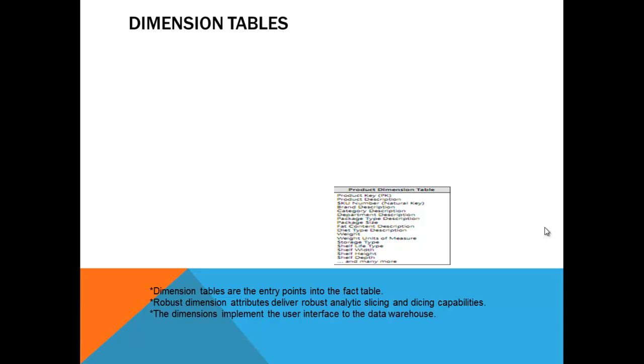Here is the sample product dimension table. We have the product key. Product description that is important for us. SKU number which is the natural key. The category description. The department description. Package type description. You have everything about it. If you talk about a customer, you have the customer name, phone number, email address, age, date of birth, income. Everything in one place. In the same way the product related information, even the size of the product, height, shape. Everything is been recorded in the product dimension table. That is the structure of the product dimension table.